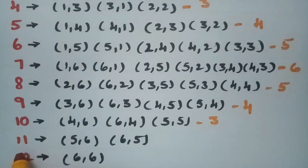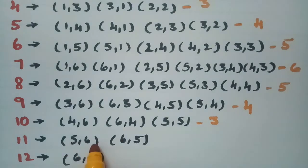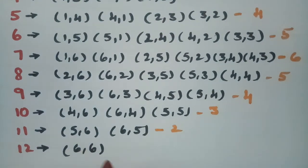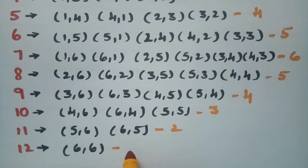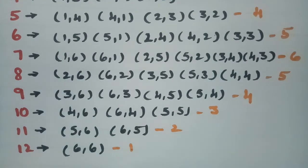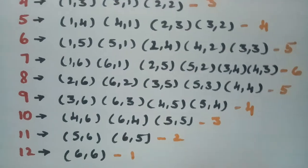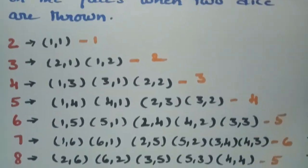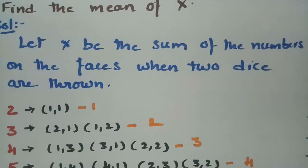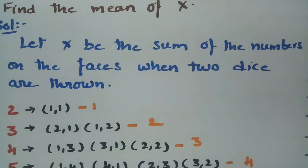For getting eleven as a total sum when two dice are thrown, the outcomes are (5,6) and (6,5) — only two possibilities. For getting twelve as a sum using two dice, there is only one chance. These are all the chances of getting the sum of the numbers on the faces.